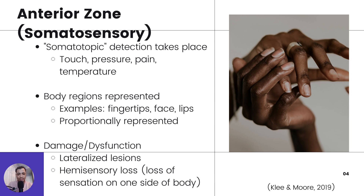The next point is the somatosensory, which is the anterior zone we just discussed. It has somatotopic detection, which just means that there are points in your body that correspond to specific areas in the central nervous system. This is where touch, pressure, pain, and temperature processing of the body regions are represented — proportionally represented depending on the relative sensitivity. So fingertips probably have more sensitivity, so they're going to take up more area in the brain. This is where face, lips, and all parts of the body are processed.